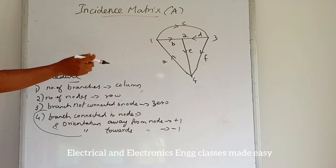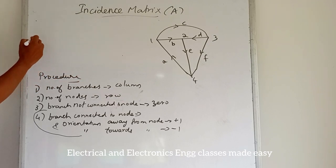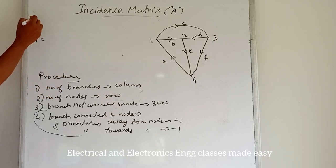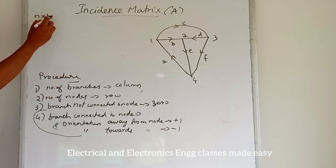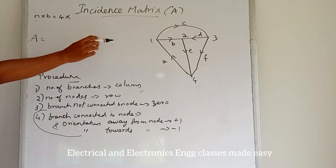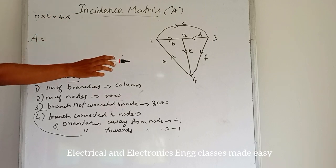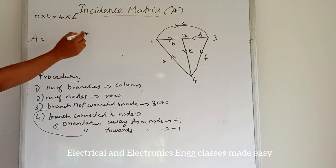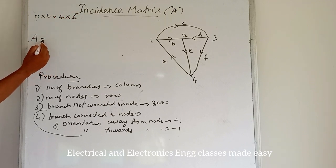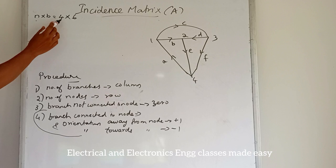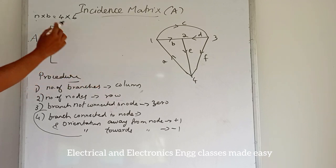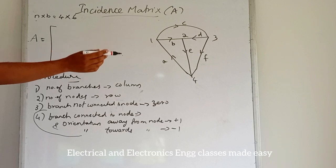Consider a graph. Let us draw the incidence matrix for this graph. It is denoted by the letter A and the order is N by B. Here N is 4, so the order is 4 by B, where the number of branches B is 6.